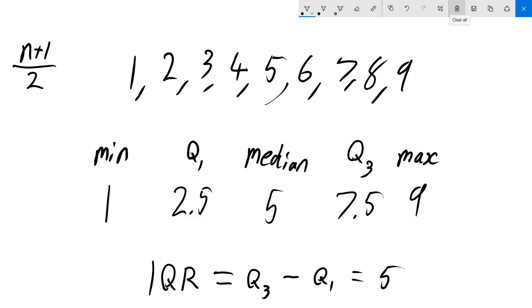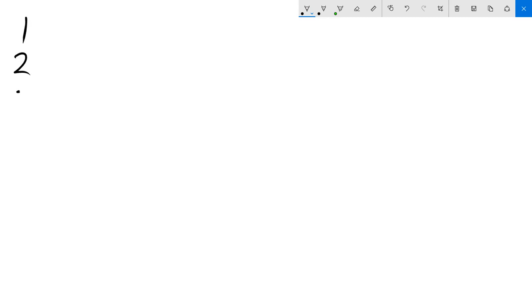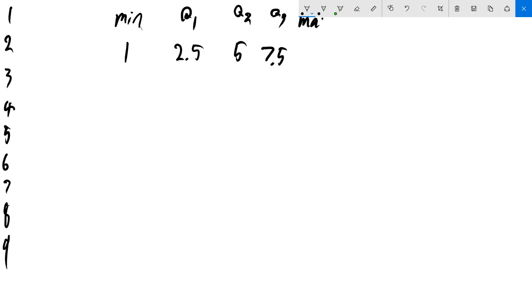I'm going to rewrite it. So here's our data on the side here. And I'm going to have the minimum 1, our first quartile is 2.5, our median or second quartile was 5, our third quartile was 7.5, and our maximum was 9. And we said that our IQR was 5.